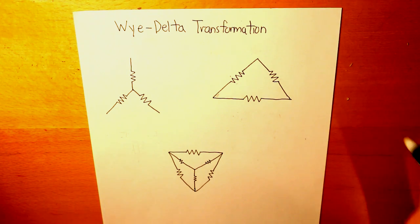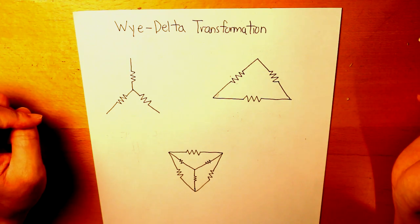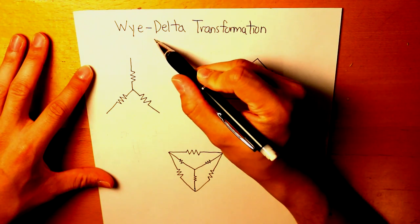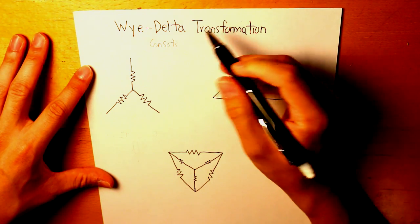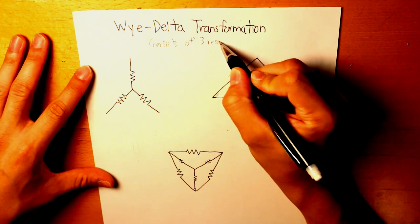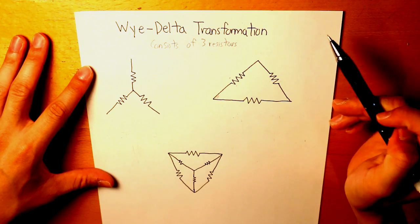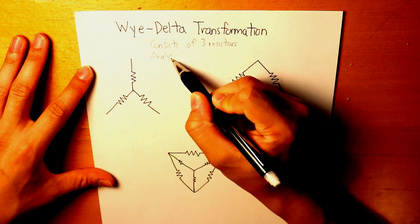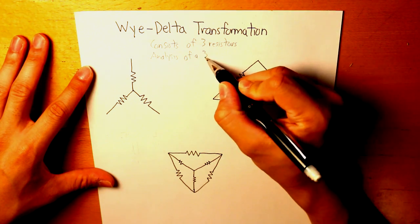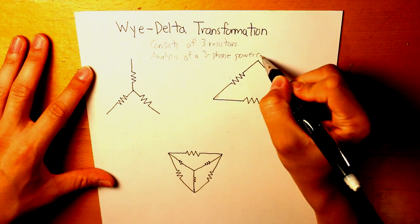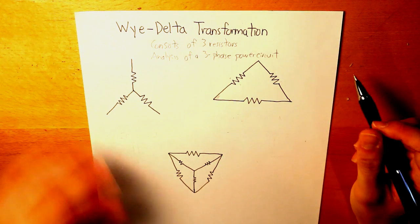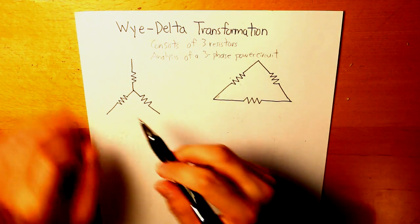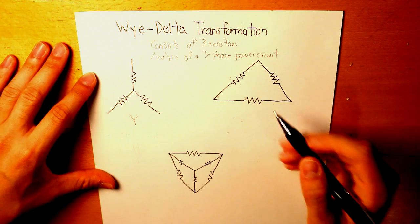Hello everyone. In today's video, we will be talking about Y-delta transformation. Y-delta transformation consists of three resistors. By application, it is the analysis of a three-phase power circuit. Essentially, in this video, we will be talking about these two different transformations — this is Y, and this is delta.